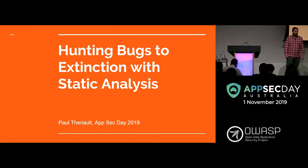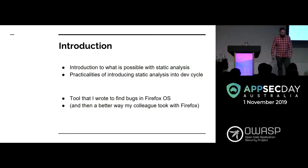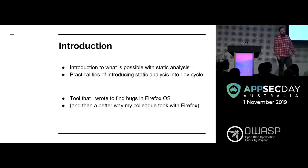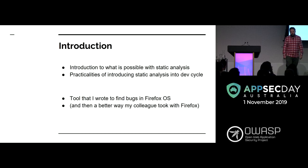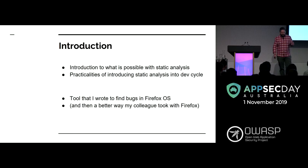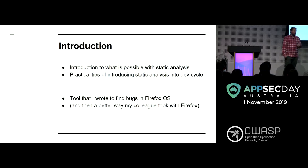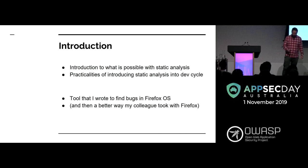It's probably a fancy word for using grep, but I'm gonna go into a bit of detail. I'm gonna do a little bit of an introduction to various types of static analysis — more around the practicalities of when you're actually trying to use static analysis on a code base. What are the things you run into? What are the mistakes I made? We're gonna look at a tool that I wrote in 2013, a better approach my colleague took, and then a more sophisticated tool I was using the last couple of years.